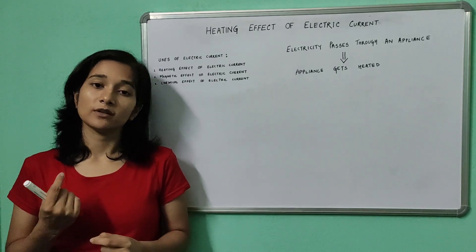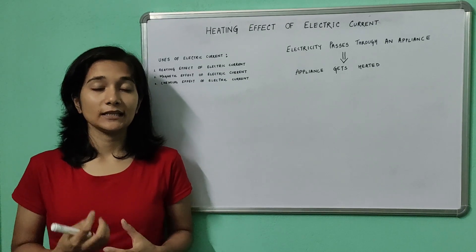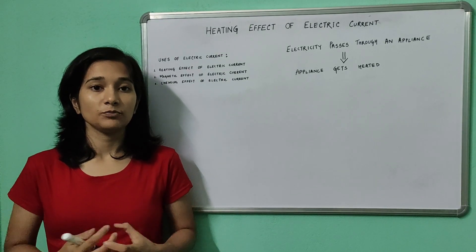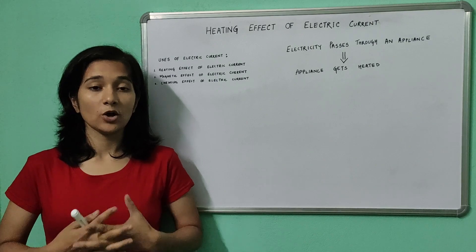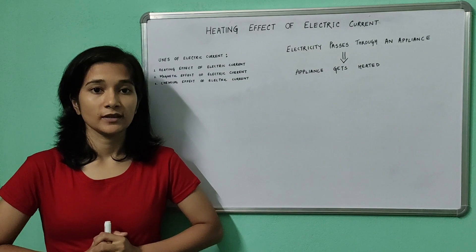Another example is the electric bulb. What happens when electric current passes through an electric bulb? The filament of the electric bulb gets heated up, it glows and provides some light energy, but along with the light energy, it also gives away some amount of heat energy.